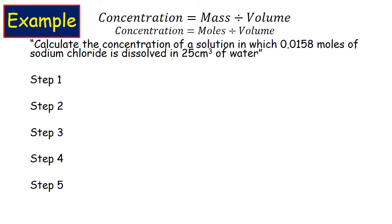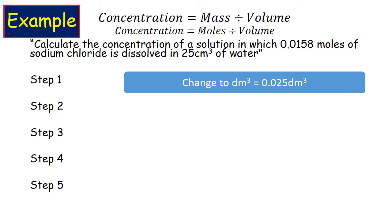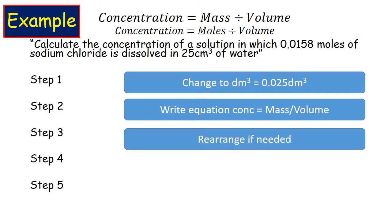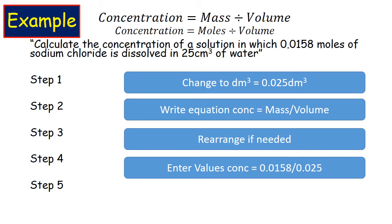We need to change the volume of water into decimetre cubed. I'm just going to divide by 1,000 for that. I'm going to write out the equation I'm going to use. And if I need to, I would rearrange here. Don't need to. I'm going to enter the values so that concentration equals my number of moles, which is 0.0158, divided by the volume, which is 0.025.